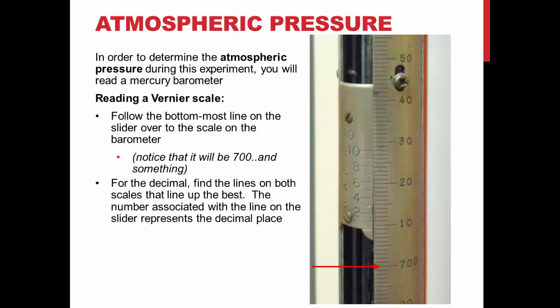This scale can be read to one decimal place, which can be found by looking to see which gradations on the right-hand scale line up best with the ones on the left-hand scale. In the picture, you can see that only the gradations for 0.9 line up with those on the right-hand side. This means your decimal place is 0.9, giving you an overall reading of 708.9 mmHg.